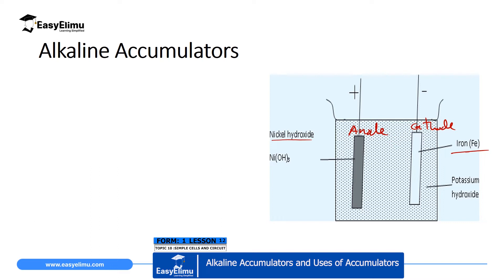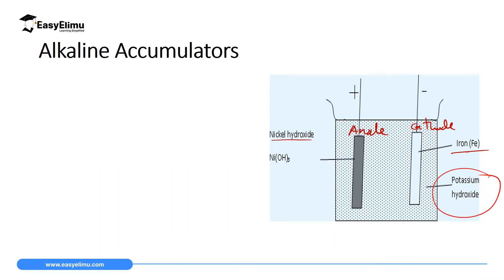In the lead acid accumulator we used an acid as our electrolyte, but here we substitute that with a basic solution: potassium hydroxide. In potassium hydroxide we have two major ions — potassium ions which are positively charged, and hydroxide ions which are negatively charged. These ions are responsible for the reaction that takes place inside the alkaline accumulator to generate electric current.